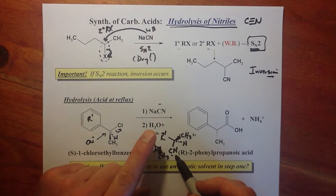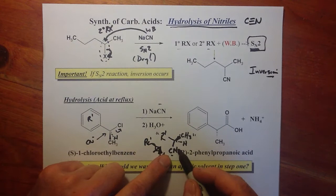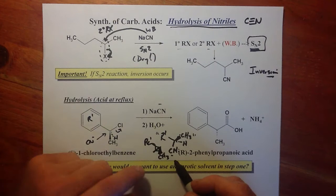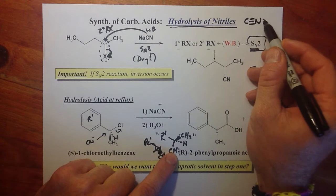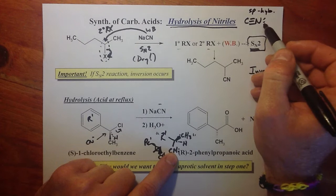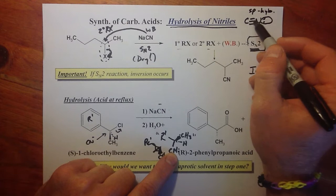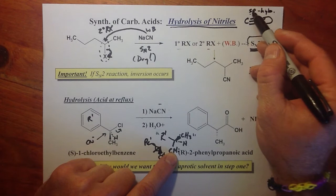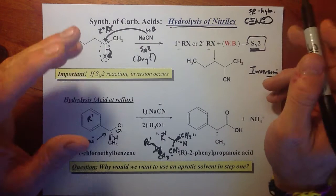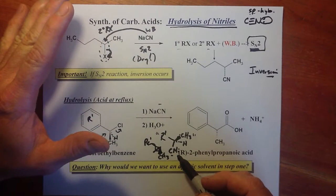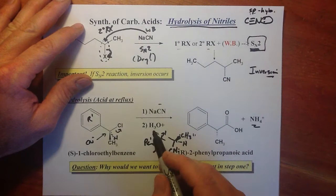For the second part — the workup — the cyano group does have a lone pair on nitrogen that can be protonated, but it takes more effort. That lone pair is in an SP hybrid orbital: the nitrogen is SP hybridized, with the lone pair sticking straight out along the C≡N axis, so it has 50% S character, close to the nucleus. But once we start protonating, things roll quickly — nitrogen effectively says 'we're going all the way,' driving to an ammonium ion (NH4+). It takes a strong acid to start, but once started, it accelerates.